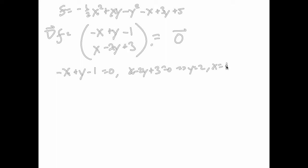If that was too fast, stop and go back — make sure that makes sense to you. This is a particularly easy one to do because I set it up that way. In general, real problems may not be this easy, but problems in classes might be. So there's a possible critical point: (1, 2).